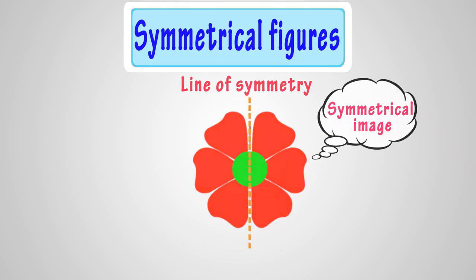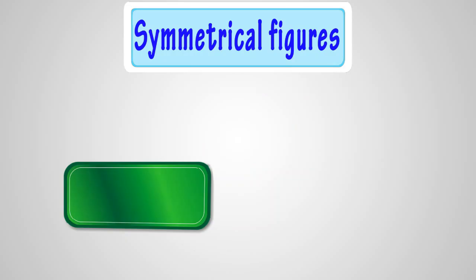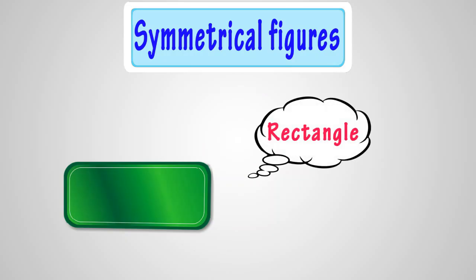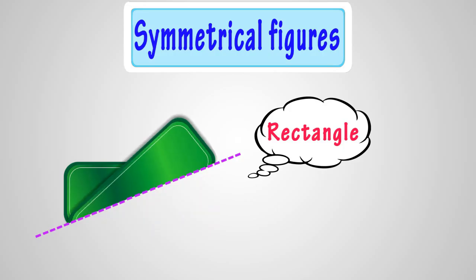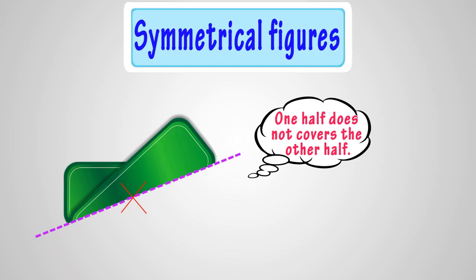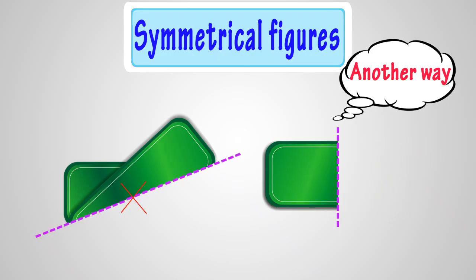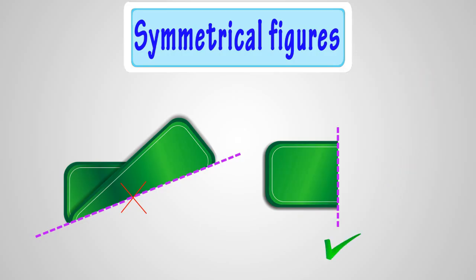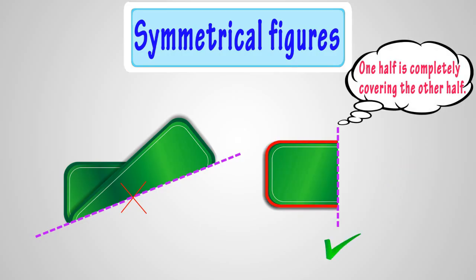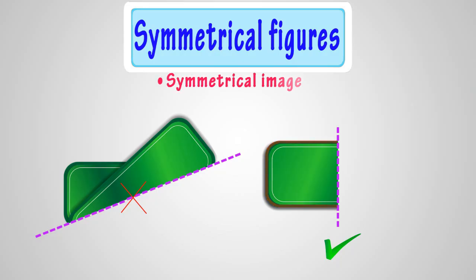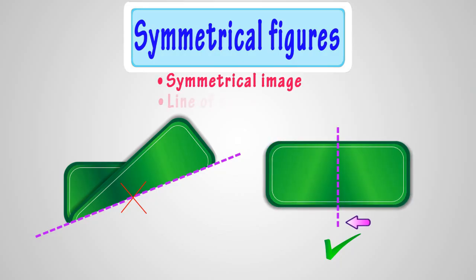Now, let's try the same with another figure. Here is a rectangle. Let's fold this rectangle halfway. If we fold it here, it does not work — one half does not cover the other half. So, let's try another way. Let's fold it this way. If we fold it here, it works — one half is completely covering the other half. So, this figure is symmetrical and this line of fold is the line of symmetry.